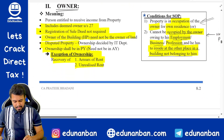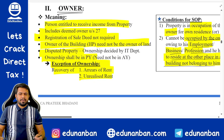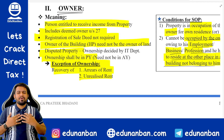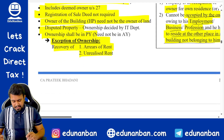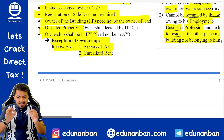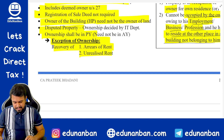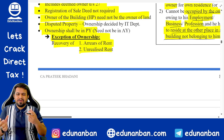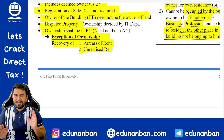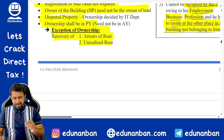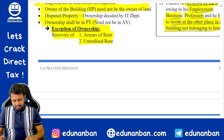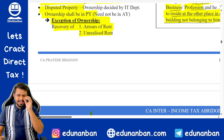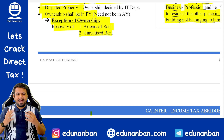The owner is the person who is entitled to receive the income from property. It includes deemed owner under Section 27. Registration of sale deed is not compulsory to be considered an owner. If owner of building and owner of land are two separate people, focus only on the owner of the building. In case of a disputed property, the income tax department will decide the owner, and ownership should be in the previous year — it need not be there in the assessment year.